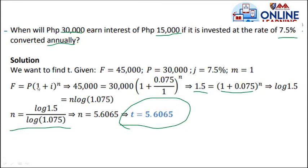So our future value is 45,000 equals 30,000 times 1 plus 0.05, the interest, divided by 1 raised to n. Equals 1.5 - where did I get 1.5? 45,000 divided by 30,000 we have 1.5 equals 1 plus 0.05 raised to n. Again, we're going to use the properties of logarithm. Therefore, n will be log 1.5 divided by log 1.05. So n equals 5.6065. It will take 5 years 0.065 years to have a future value of 45,000 pesos.